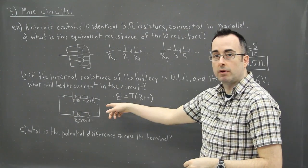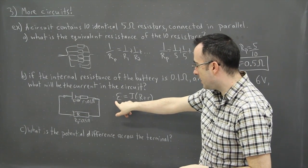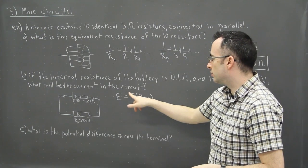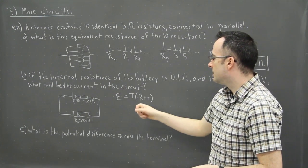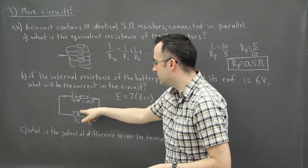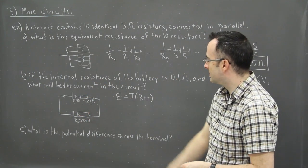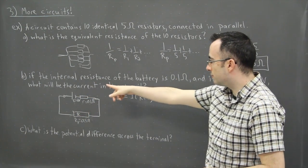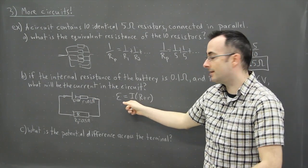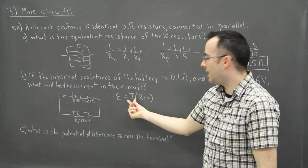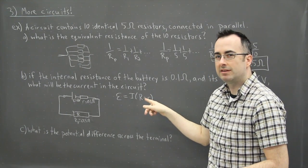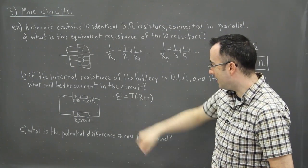The EMF equals I times big R plus little r. That's how EMF works. So the EMF of the battery, what it's trying to put out so to speak, is equal to the current in the entire circuit times the sum of the two resistors. In other words, the big resistor here plus the little mini internal resistance there. Now I'm looking for the current, so I want I. And in order to solve for I, that's really easy in this case.